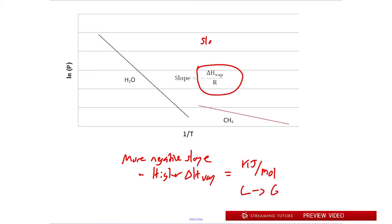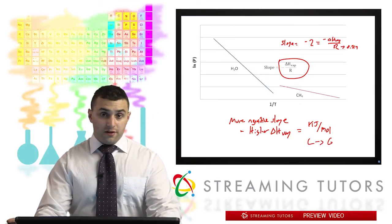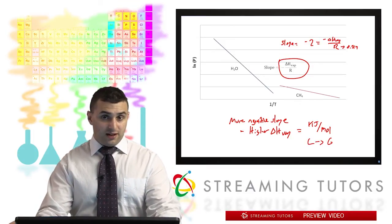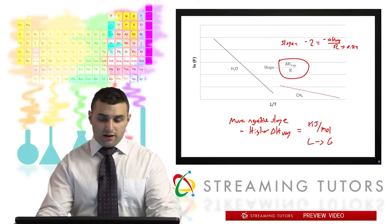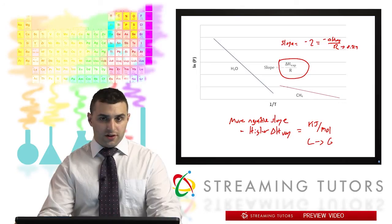So obviously we can also calculate the enthalpy of vaporization based on measuring the slope. So if we say the slope is equal to, I don't know, negative 2, we would set that negative 2 equal to negative delta H of vaporization over R. We'd plug in R 8.314. And then we could calculate for the enthalpy of vaporization. So using the Clausius-Clapeyron equation is a way that we can calculate the enthalpy of vaporization of a substance. And we see that H2O has a higher delta H than CH4 does.